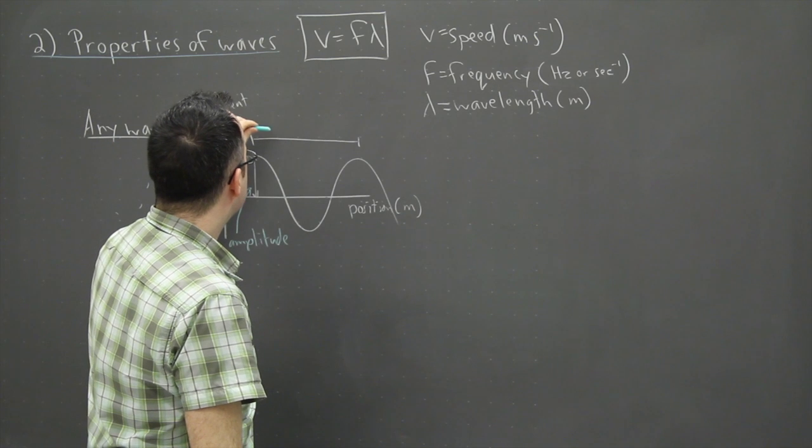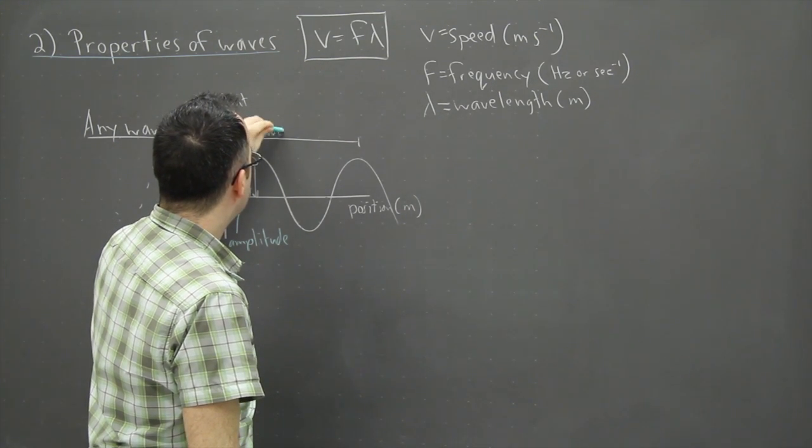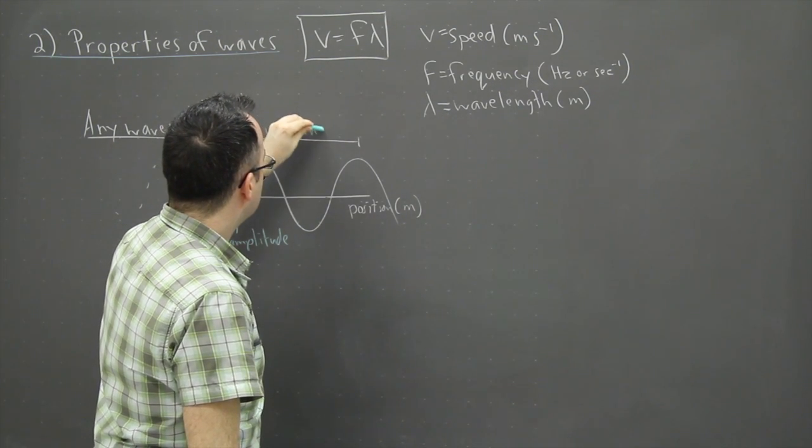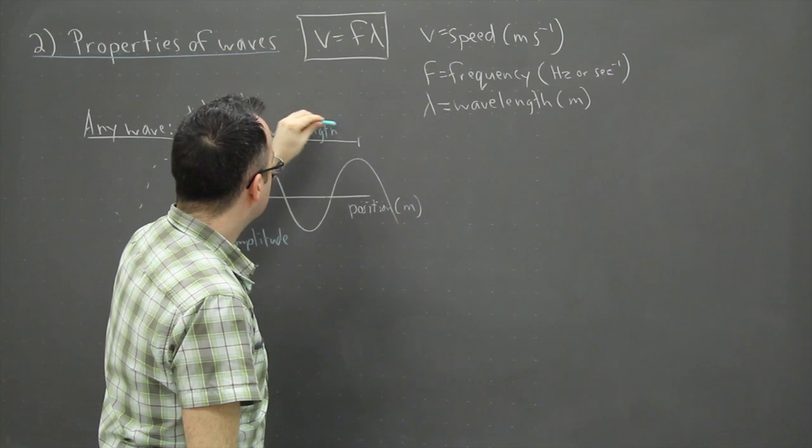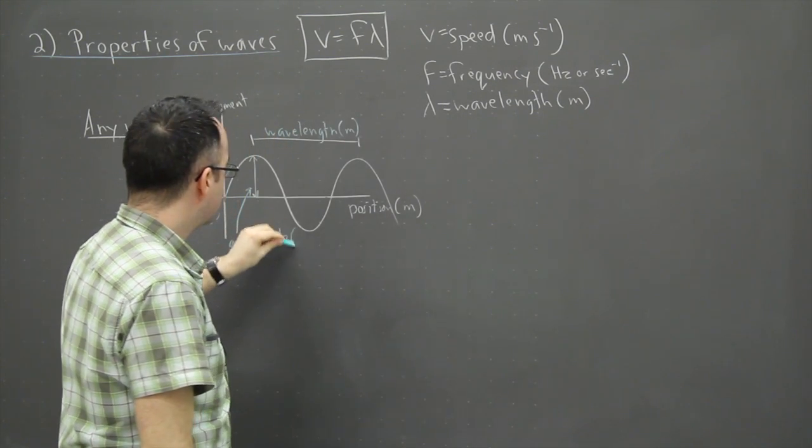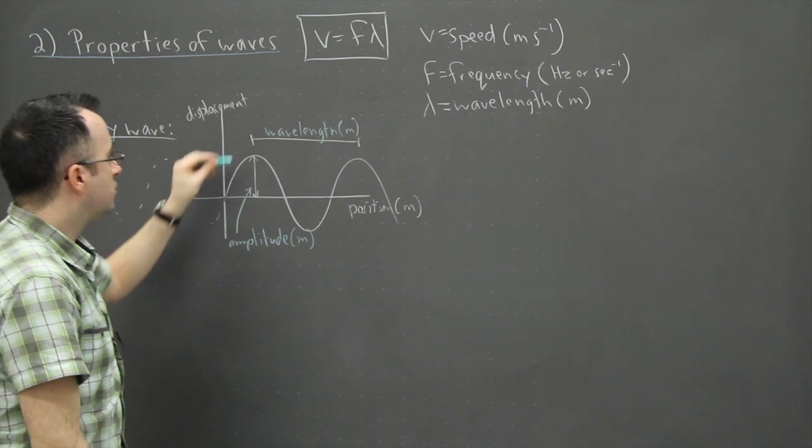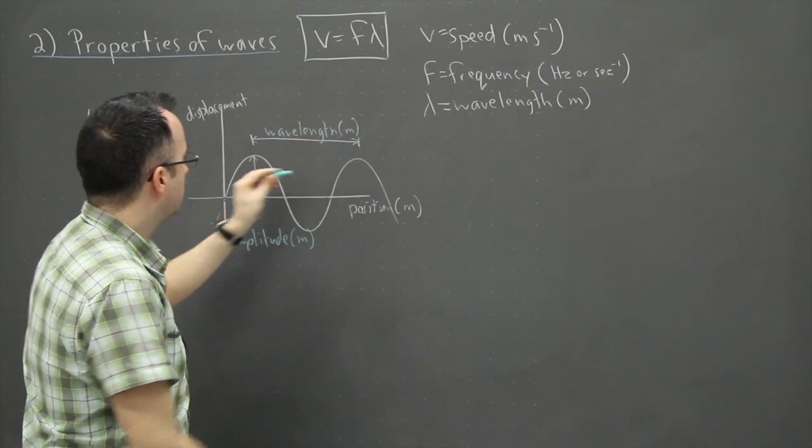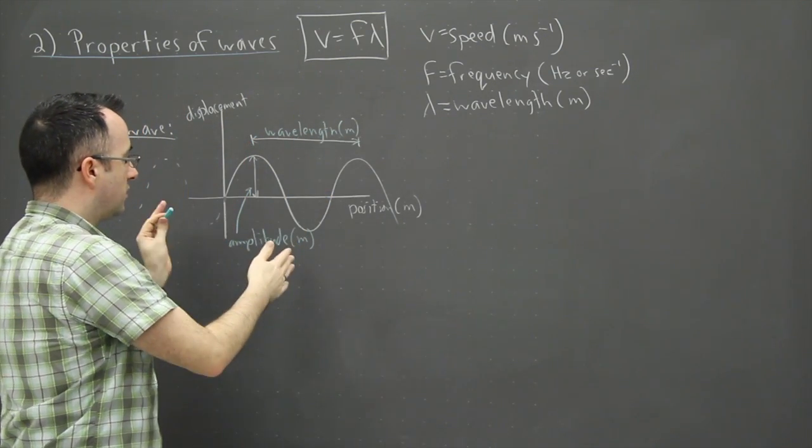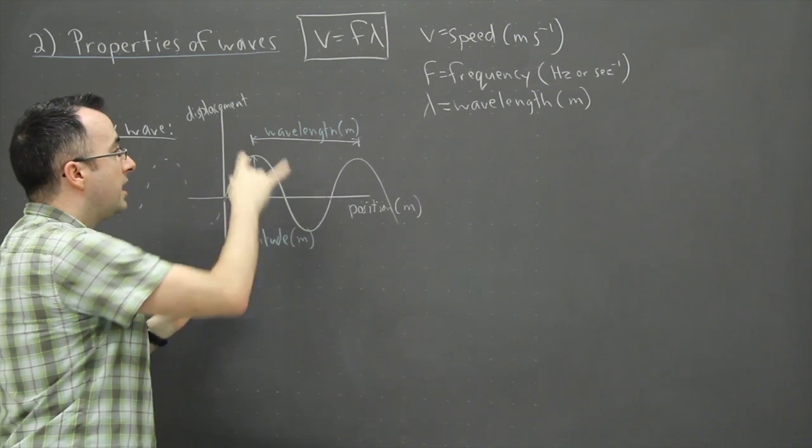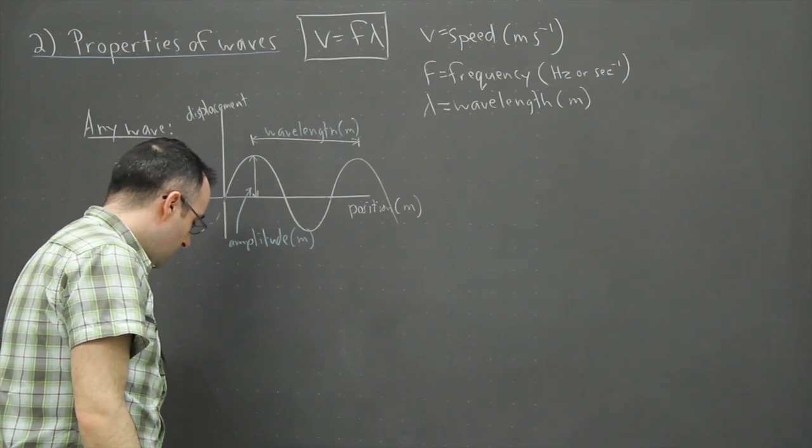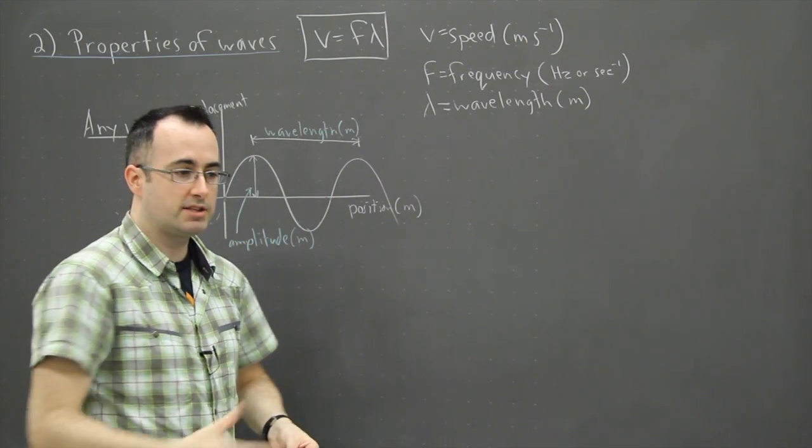All this distance is what we call the wavelength, measured in meters. By the way, the amplitude is also measured in meters. That distance from peak to peak or trough to trough is the wavelength.